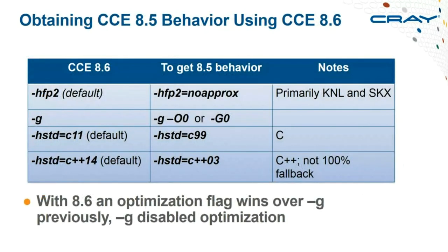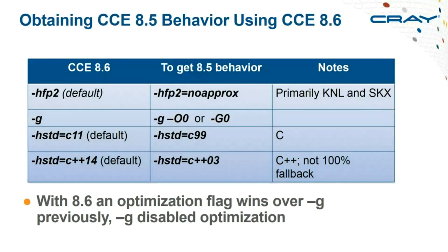Regarding specific flags: the flag controlling hardware approximations is '-aprox' and '-noaprox'. The Cray compiler has both generic optimization flags (O1, O2, O3) and specific ones like '-hfp2' for floating point optimization level 2. '-noaprox' qualifies the FP optimization to disable hardware approximations. You can also revert the language standard to C++03 using the appropriate flag, though with the changed header files it's not identical to the earlier compiler. Regarding '-g': previously it completely disabled optimization with a warning; now '-g' loses against an optimization flag, so '-g -O2' gives you optimization.